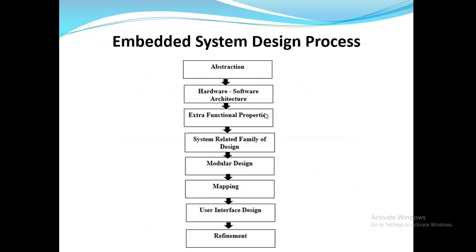To design an embedded system, the first step is abstraction — defining what we want to design, which in our case is a microwave oven. Next is hardware-software architecture — deciding the blocks, functions, and hardware components to use. Then we define extra functional properties such as modes of operation, followed by system-related family design and modular design — developing individual modules and combining them.